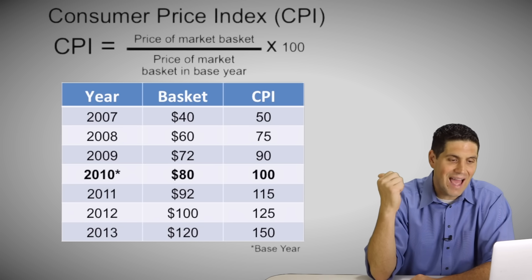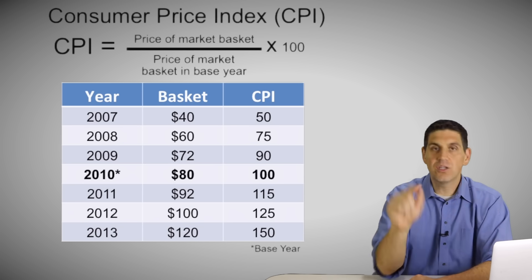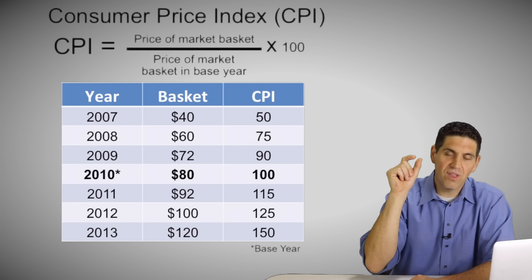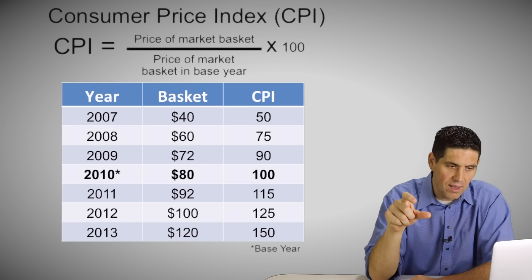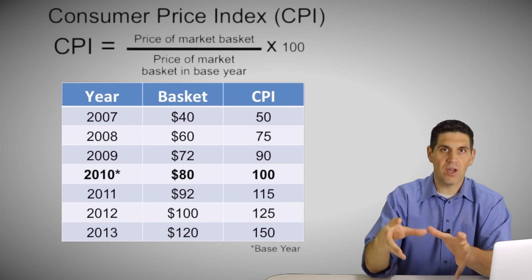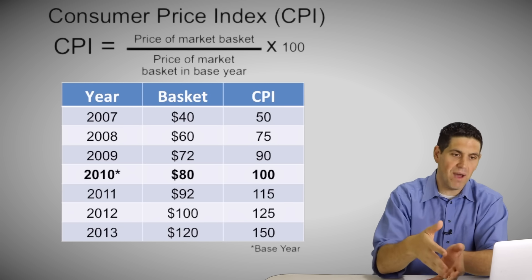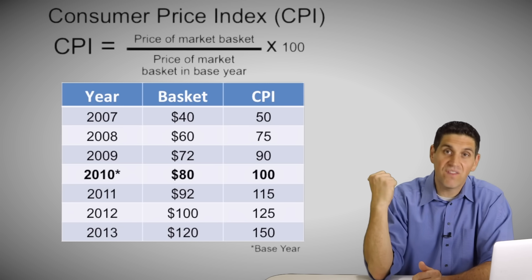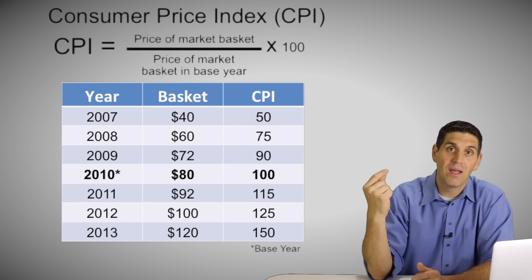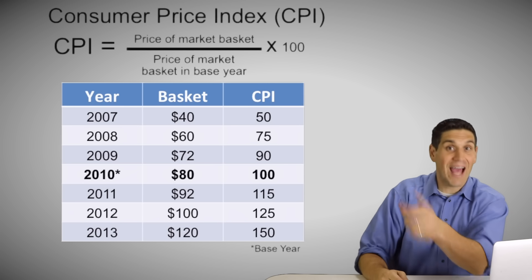For 2009 the CPI is 90, and for 2008 it's 75. In 2007, if the value of the market basket is 40 and the base year is 80, that's obviously half as much, so the CPI must be 50 — prices were 50% lower compared to the base year.